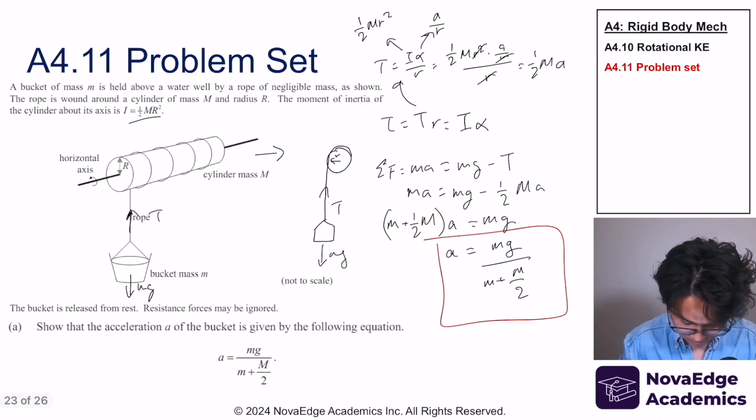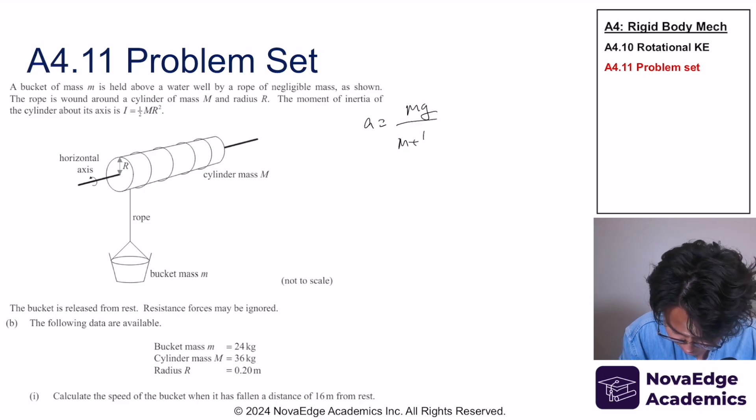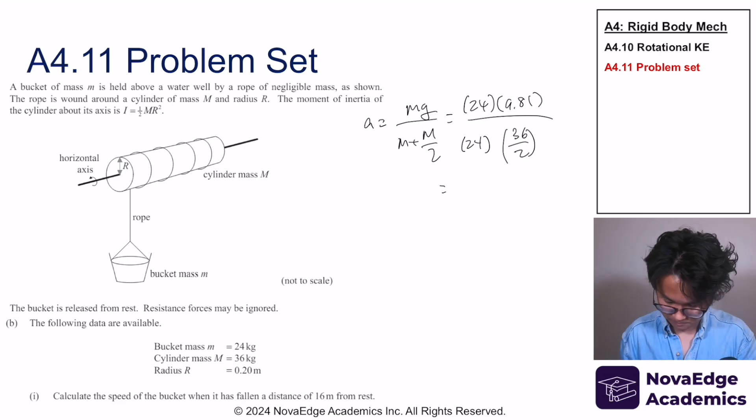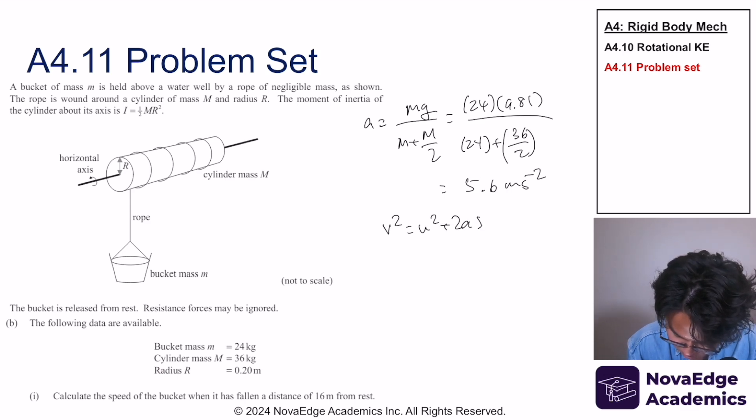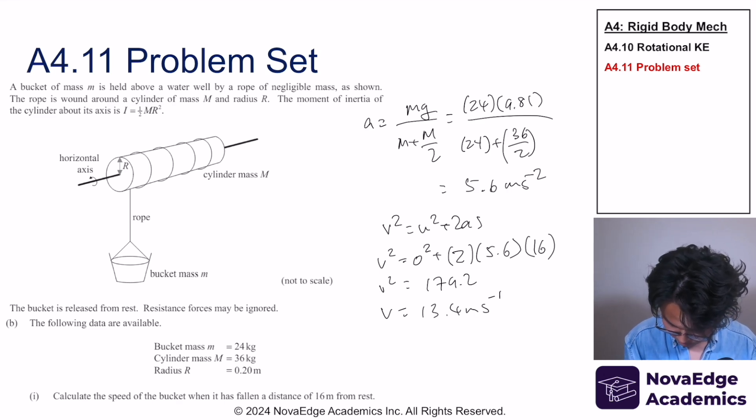Acceleration, we got that it is equal to mg over m plus M/2. So that's going to be equal to 5.6 meters per second squared. Now once we know the acceleration, all we need to do is projectile motion kinematics.